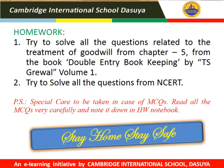So students, we have completed the topic Treatment of Goodwill. Now it is homework time. Please try to solve all the questions related to Treatment of Goodwill from Chapter No. 5, Admission of a New Partner, from your book Double Entry Bookkeeping by T.S. Grewal, Volume 1. These questions are given at the end of every chapter as exercise questions. Also try to solve all the questions related to this topic from NCERT, and please give special attention to the MCQs. Read all the MCQs very carefully and note them down in your homework notebook. If there is any query or doubt, you can call me personally at my phone number. Students, stay home, stay safe, but study regularly. Thank you very much.